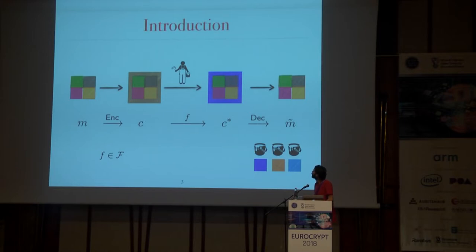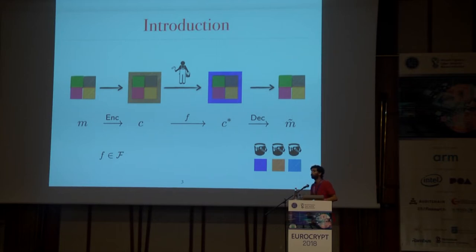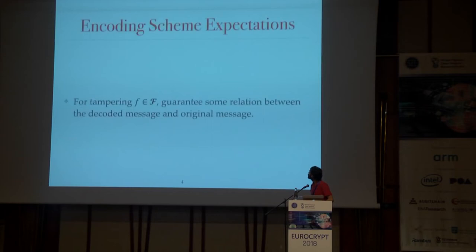So how do we do this? We're going to have a coding scheme. We take a message M, encode it to get a codeword C, send this codeword C, and the channel applies the tampering function F. What is received is C-star, which is F applied on C, and then we decode C-star to get some tampered data. Importantly, in this coding scheme there are no secrets — encode and decode are completely public and have no secrets at all.